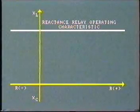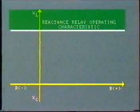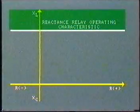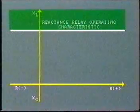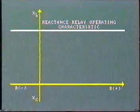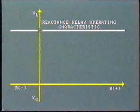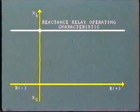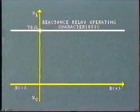During normal operation, the total reactance of the load and the transmission line will be above the operating set point. This will be 90% of 86.6 ohms, or 78 ohms in our example.